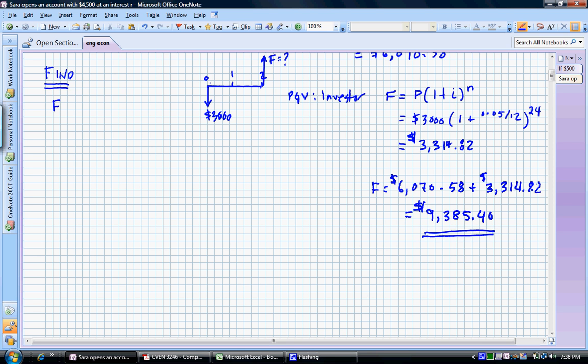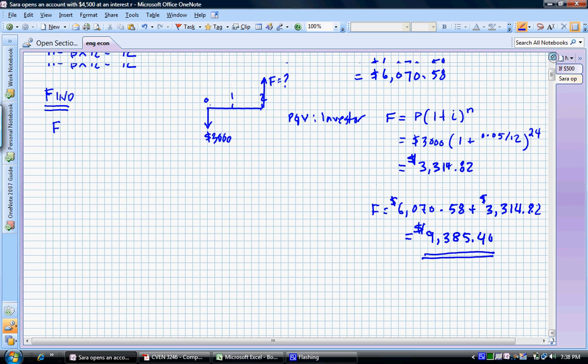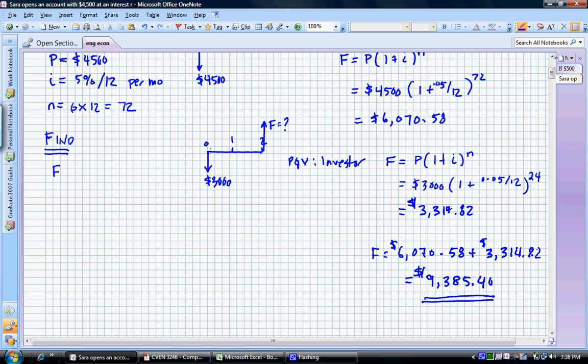One last thing to do in all of these problems is to look at the final answer. Did we get the right answer? Does the answer make sense? Sure. We end up with $9,385. We've made two investments, one at $4,500 and one at $3,000 over six years, so we're in the ballpark. We know we're probably pretty close.